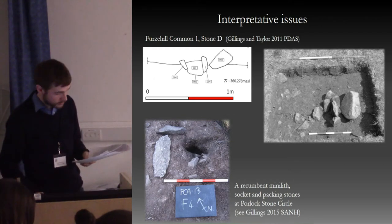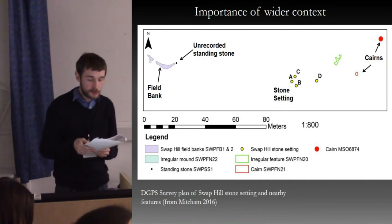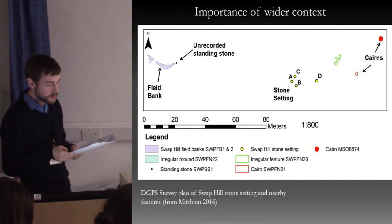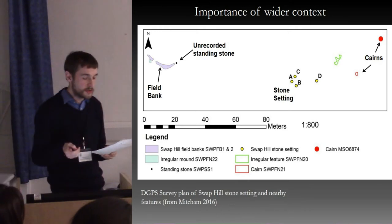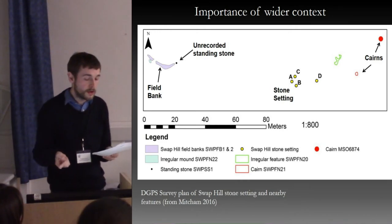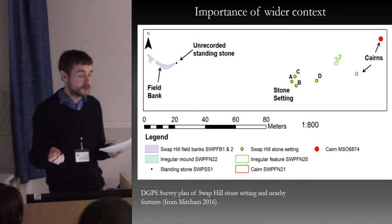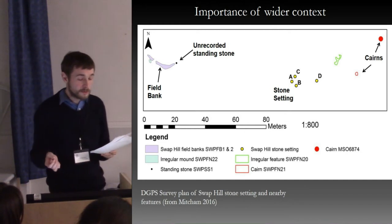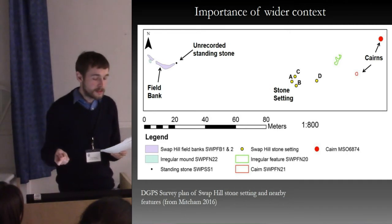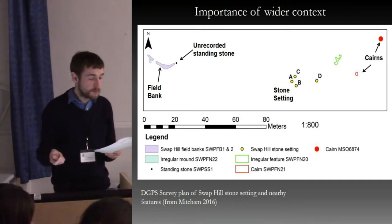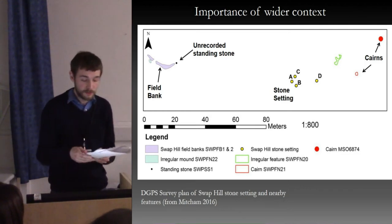Recent fieldwork has also suggested that the settings are part of wider landscapes of largely non-surface-visible features, including field boundaries, cairn activity structures, and stone spreads. Any interpretation that focuses exclusively on the layout of the stones is therefore missing the evidence of what people were doing in their vicinity, which is obviously quite important in interpreting what these sites were.